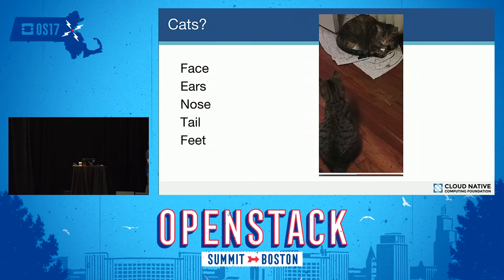We found another cat, potentially. We notice the pointy ears, the circular face. This is a little harder to see, but this is Sprinkles again. We notice the long tail. Is this a cat? If we have many cats — but did we tell our system that we might be expecting many cats? Once again, another opportunity to come back around and train the system.